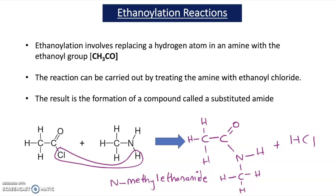The reason this reaction works is because there is a lone pair of electrons on the nitrogen of the amine, and this attacks the delta-plus carbon on the acid chloride. The carbon is delta-plus because it's next to an oxygen, which is electronegative, so the oxygen is delta-minus.